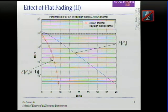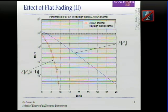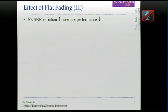For the AWGN — the additive white Gaussian noise — the channel is basically one. If we could somehow average the effect of the channel, then we could approach this performance, and that would be great. When the received signal-to-noise ratio variation increases, the average performance decreases and gets poorer.